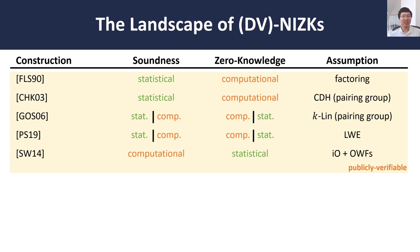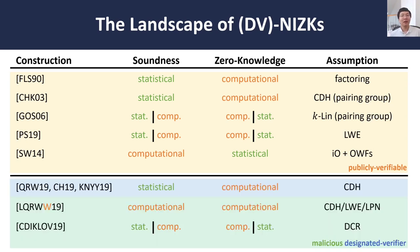Notably, the constructions of Groth-Ostrowski-Sahai based on pairings, as well as the Peikert-Shiehian construction based on lattices, provide what's called a dual-mode property, where there are essentially two ways of constructing the common reference string: one of which gives statistical soundness, the other gives statistical zero knowledge. Moreover, if we consider the relaxation to the designated verifier model, we have more constructions from even weaker assumptions — for instance, from the computational Diffie-Hellman assumption over a pairing-free group, from the learning parity with noise assumption, and more.